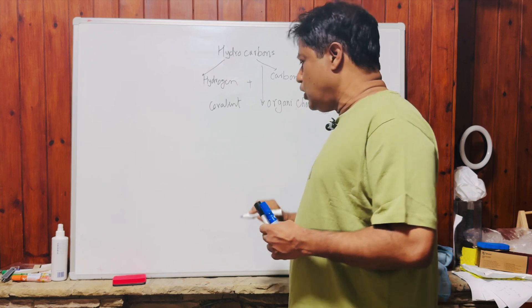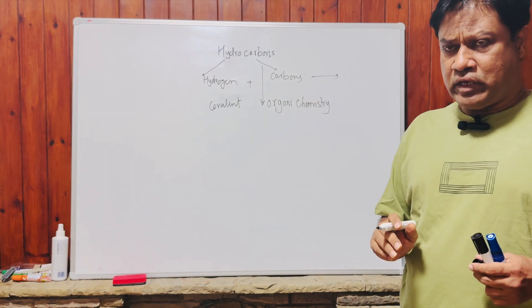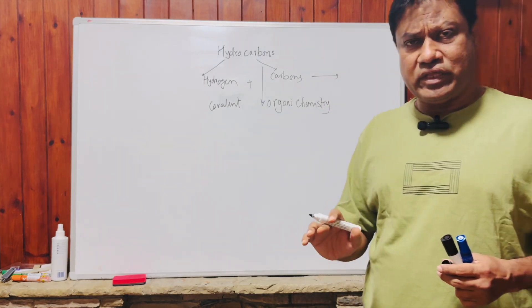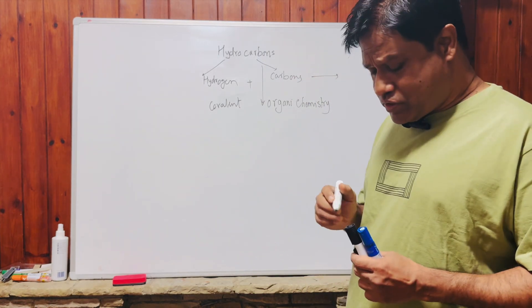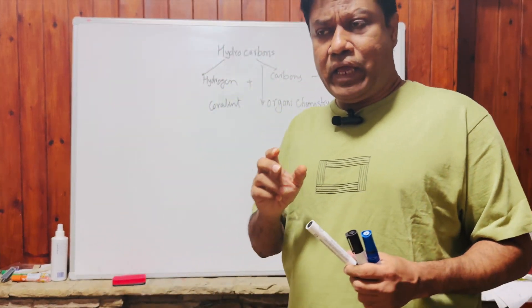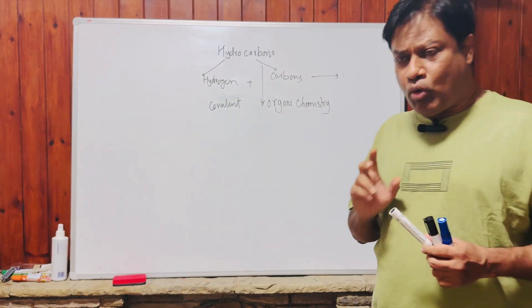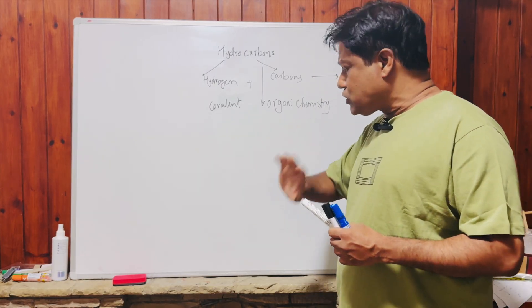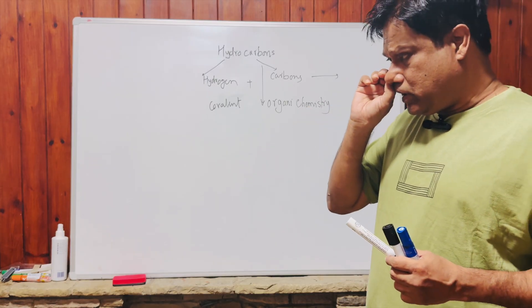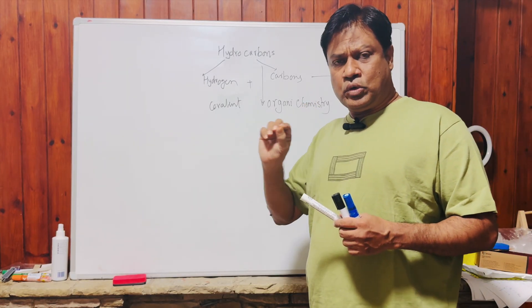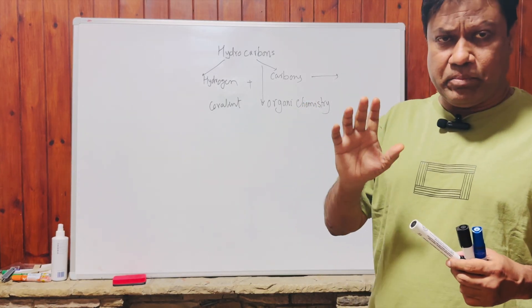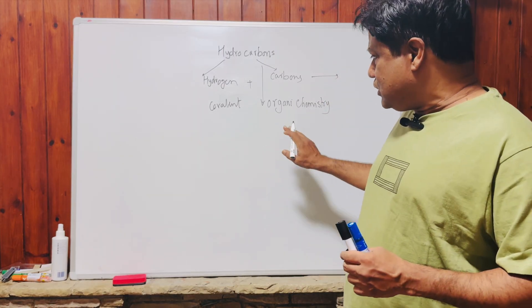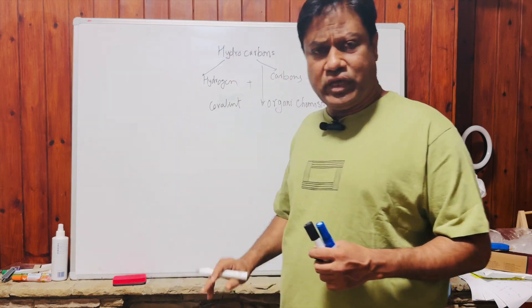Organic chemistry has a vital element, which is nothing but carbon. Why is carbon the major or important element for organic chemistry? Without carbon, we do not have organic chemistry. So carbon is an important element of all organic compounds.